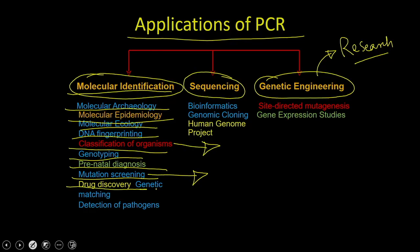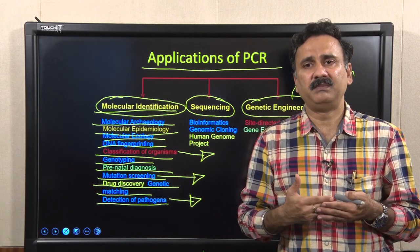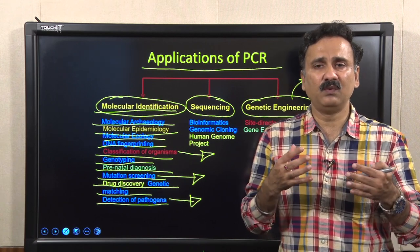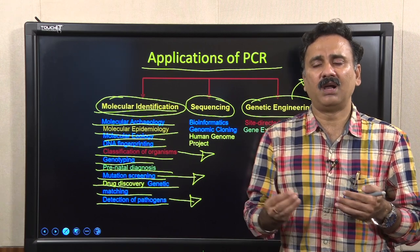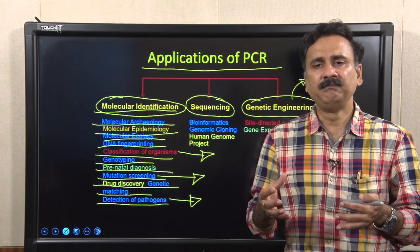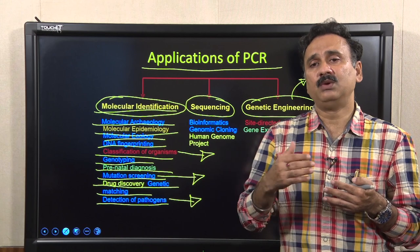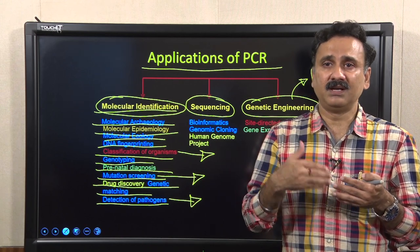PCR can also be used for drug discovery, genetic matching, and detection of pathogens. Detection of pathogens is a very important area where PCR is advantageous because of its very high sensitivity. Even if you have a very small number of copies of a pathogen within an organism or within blood, you can amplify that number and use it for identification purposes.